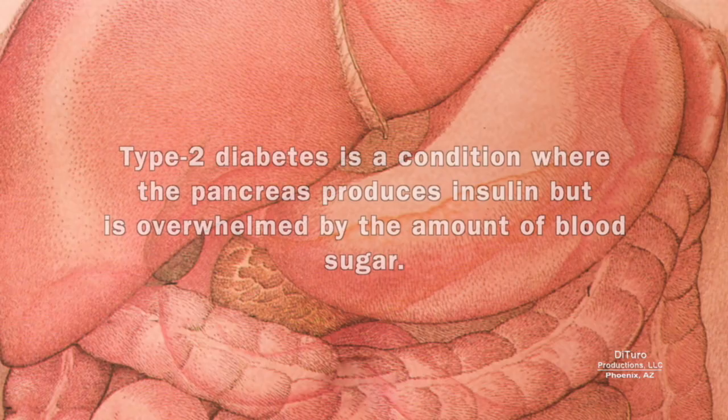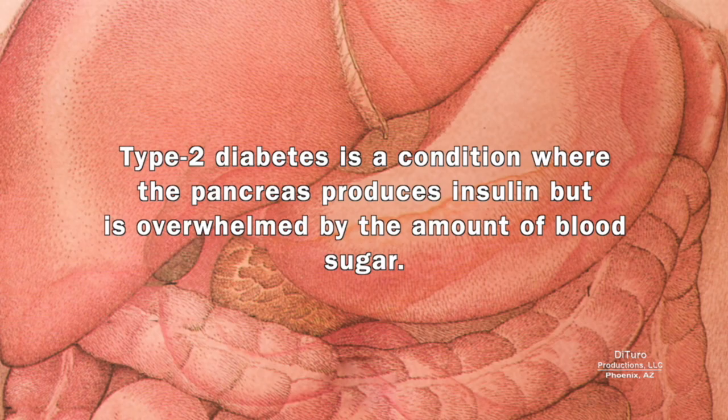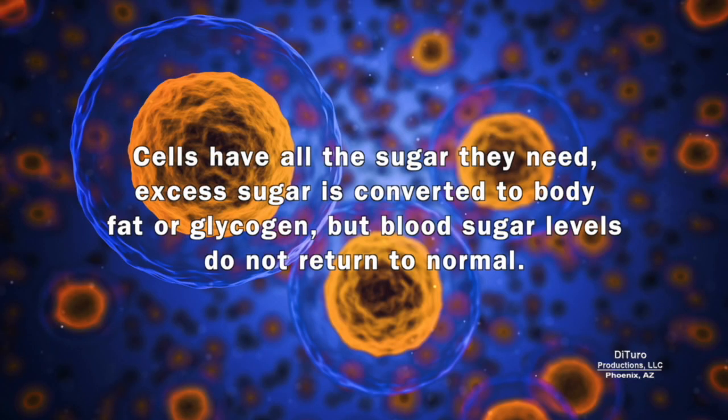Type 2 diabetes is a condition where the pancreas produces insulin but is overwhelmed by the amount of blood sugar. Cells have all the sugar they need. Excess sugar is converted to body fat or glycogen, but blood sugar levels do not return to normal.